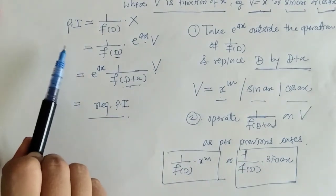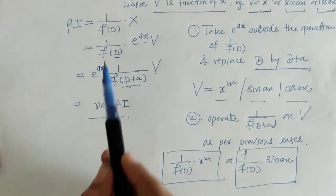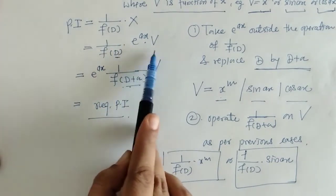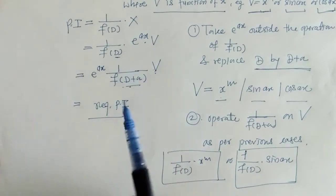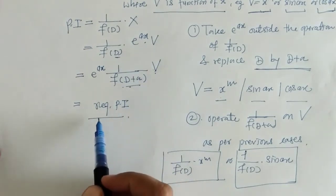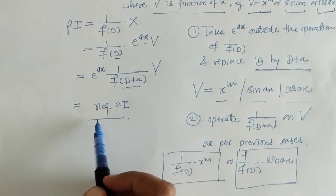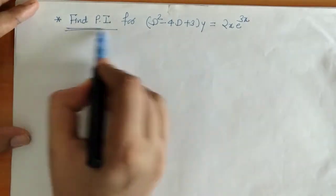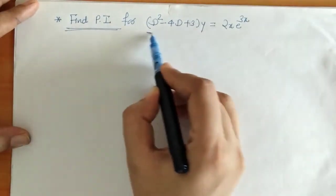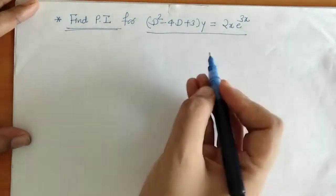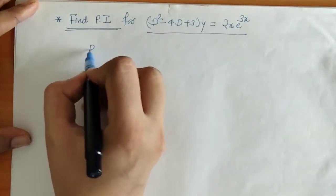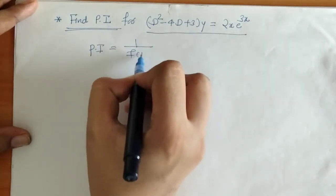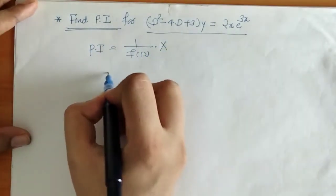In this way we have to proceed for finding PI when we have x equal to e raised to ax into v. Now we will solve some examples on this case. Here we have to find the PI for this differential equation, so we will write down f of D and x.